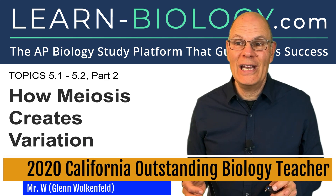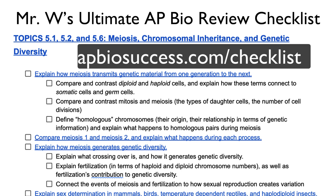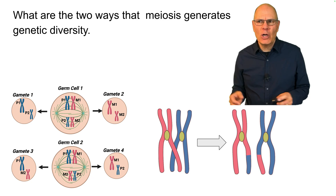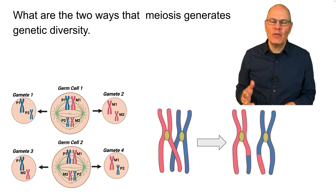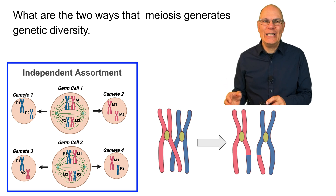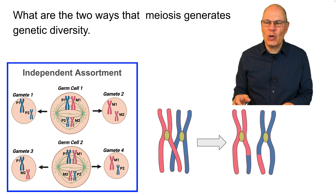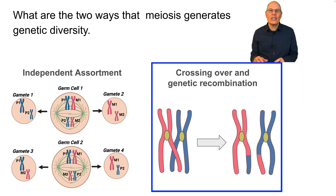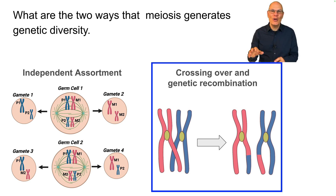How meiosis creates variation. What are the two ways that meiosis generates diversity? The first is independent assortment. The second is crossing over and genetic recombination. We'll explain both of those now.